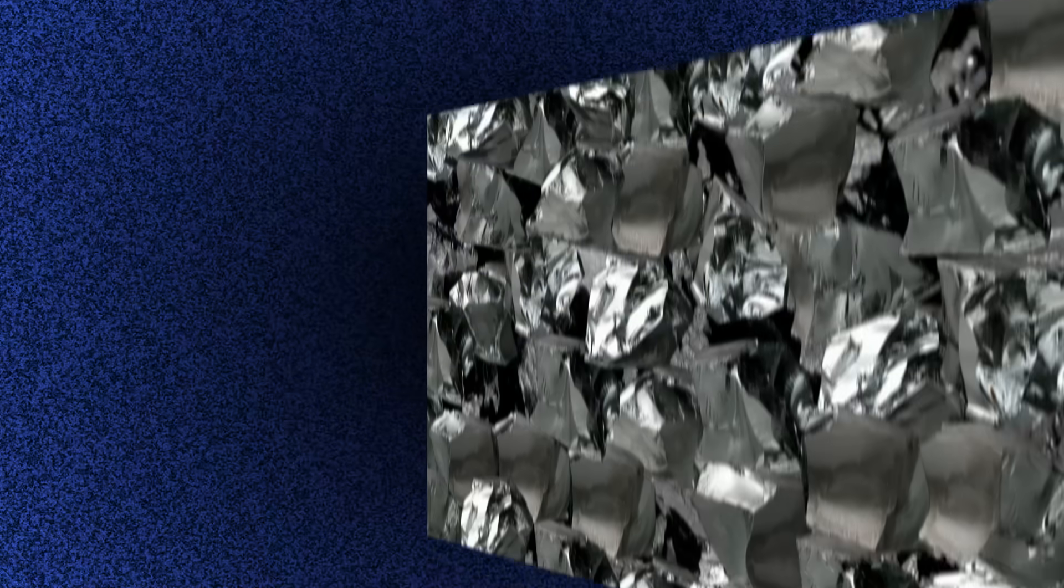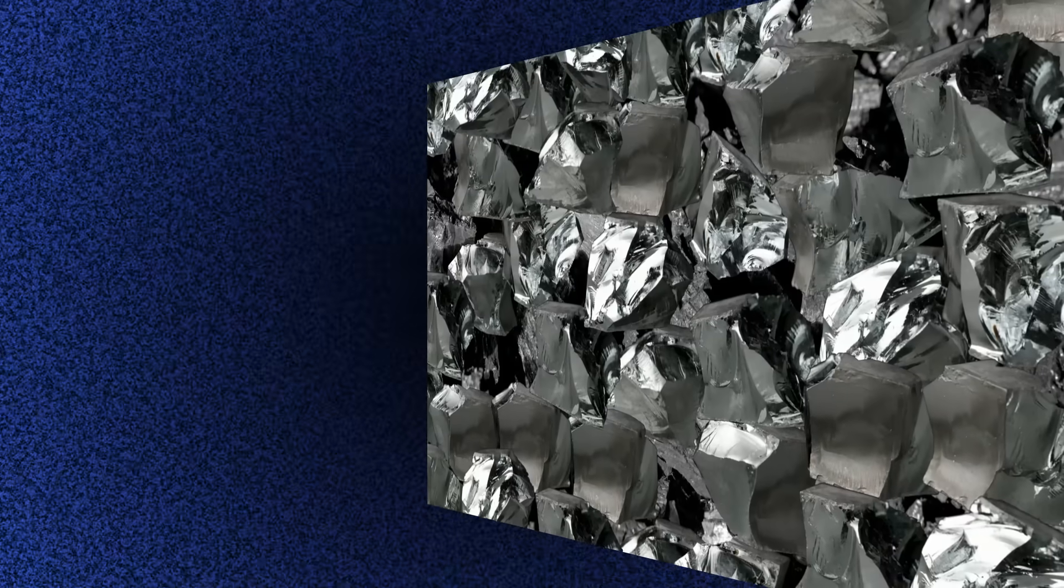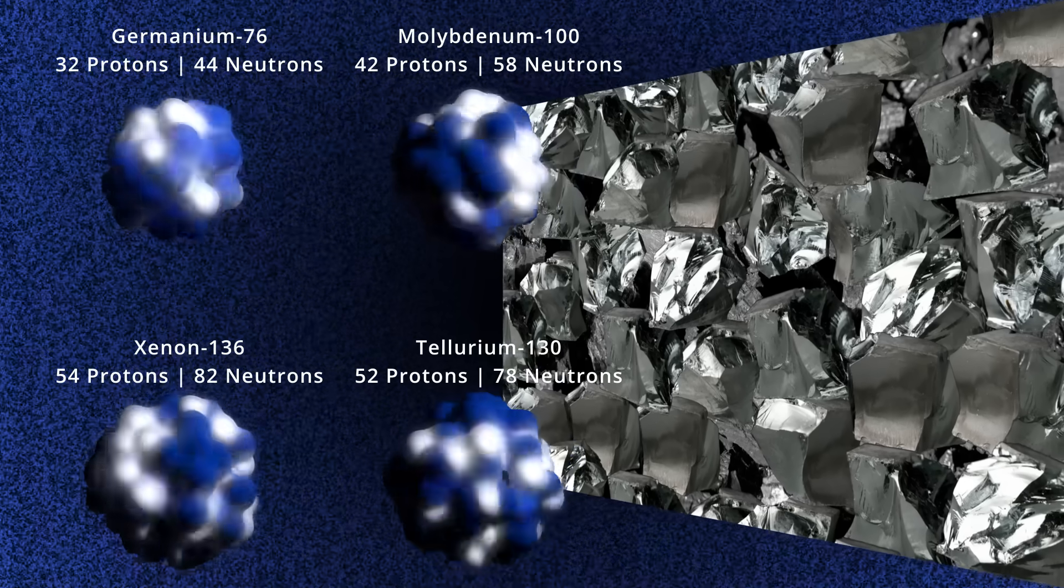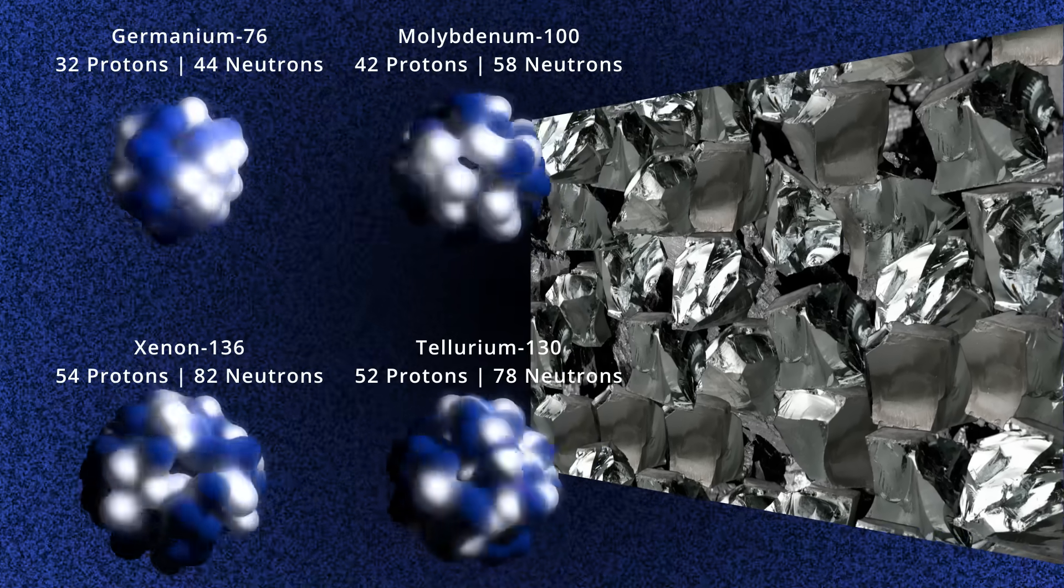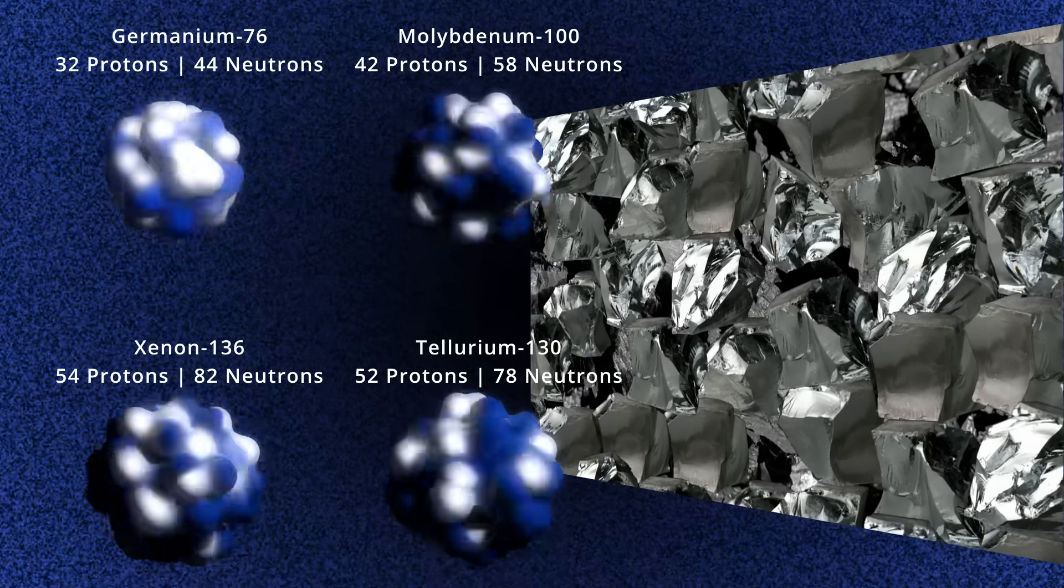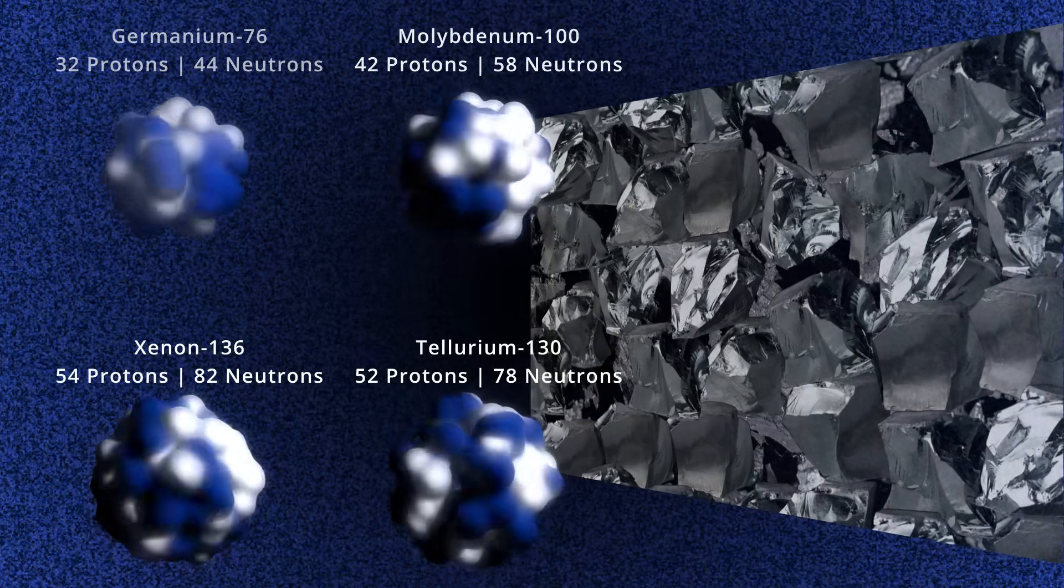For each ton of material, scientists look for one decay event per year. Ton scale experiments are envisioned requiring vast amounts of designer nuclei in order to observe a single double beta decay event.